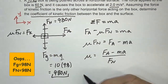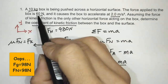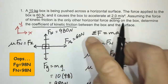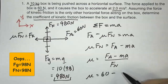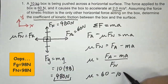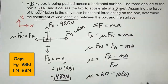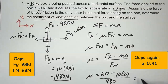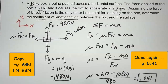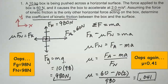Now I'm going to substitute. Mu equals Fa, which is 60, minus mass times acceleration: 10 times 2 equals 20, so 60 minus 20 equals 40, all divided by Fn which is 98. We get 0.041. This number has no units — the coefficient of friction is a ratio, so it's one of those numbers in physics without units.